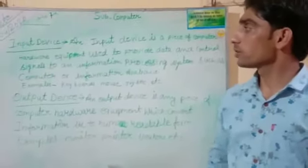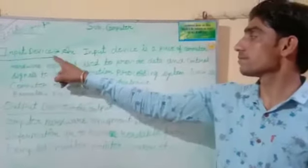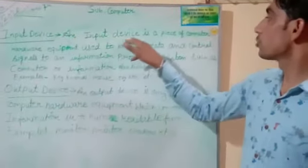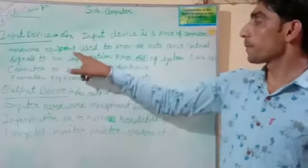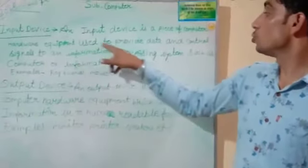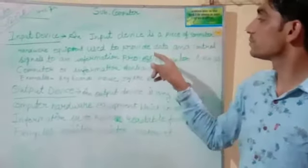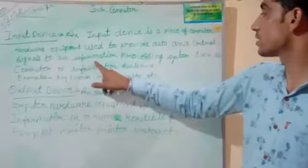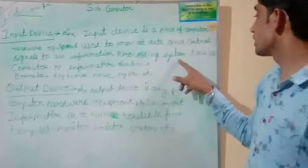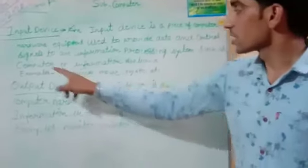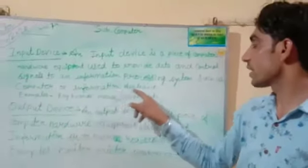What is an input device? An input device is a piece of computer hardware equipment used to provide data and control signals to an information processing system, such as a computer or information appliance.